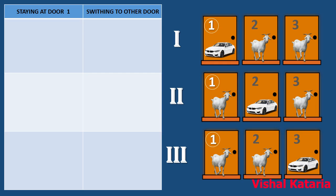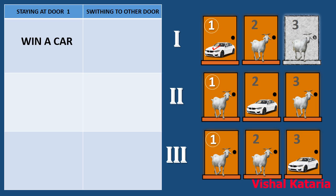In the first case, you have selected door number one, and Monty knows the car is behind door number one. Monty may open any of the two doors — door number two or door number three. Let's say he opens door number three. If you stay at door number one, you are going to win a car. But if you switch to door number two, you will win a goat.